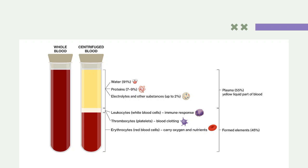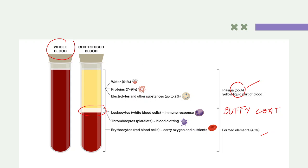Looking at whole blood, once centrifuged it can be divided into three parts: plasma, buffy coat, and formed elements — basically your erythrocytes. Plasma is about 55%, buffy coat is probably 10% or less, and the rest is erythrocytes. That is why intravascular and plasma are sometimes synonymous, since the majority is made up of plasma.